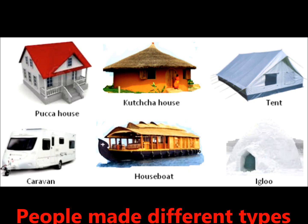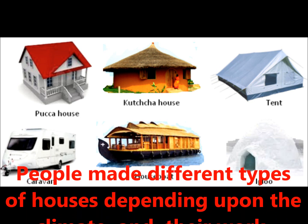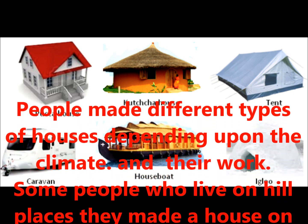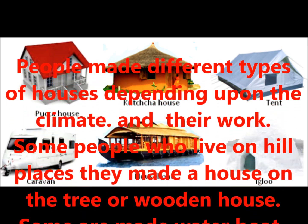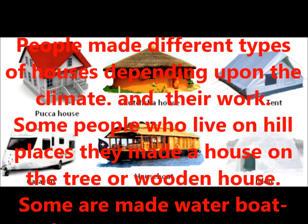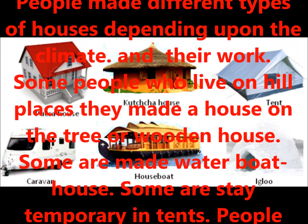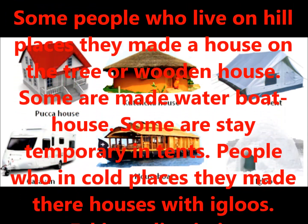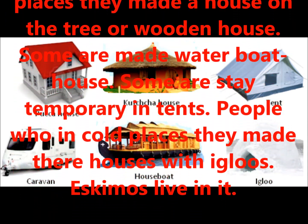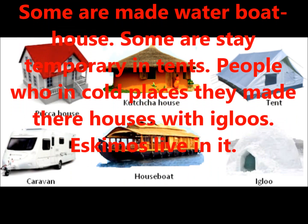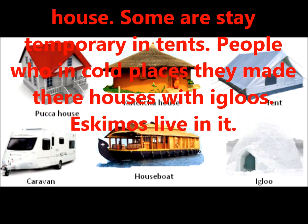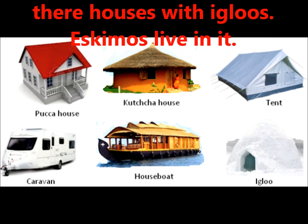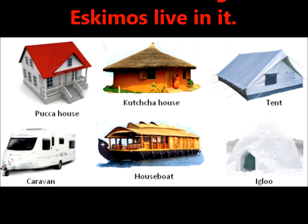Depending upon the climate, people make different types of houses. Some people who live in hilly places make a house on a tree or they make a wooden house. Some people make a water boat house. Some people stay in tents. People who live in cold places make their house with ice. These houses we call igloos. Eskimos live in them.